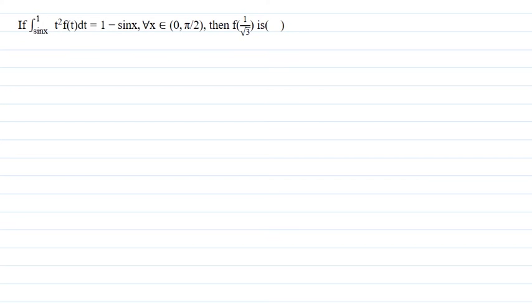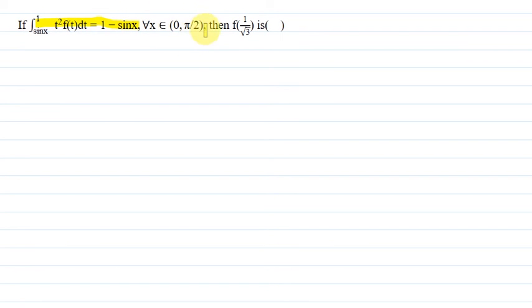Hello everyone, I am your teacher for this question. Let me explain this question to you. The question says that if the integral from sin x to 1 of t² f(t) dt equals 1 minus sin x, where x belongs to 0 to π/2.